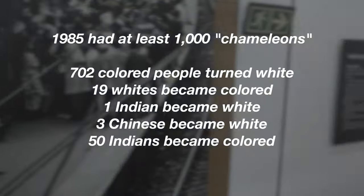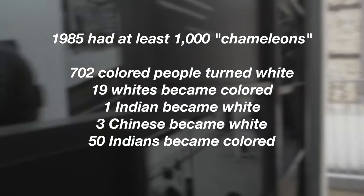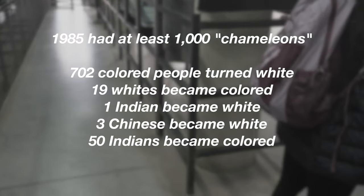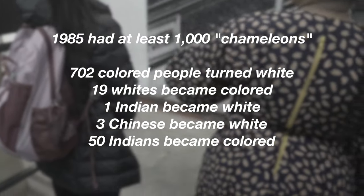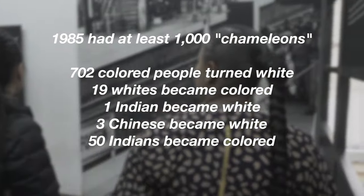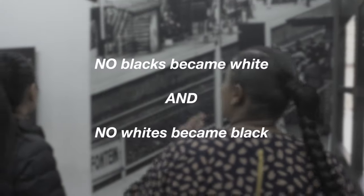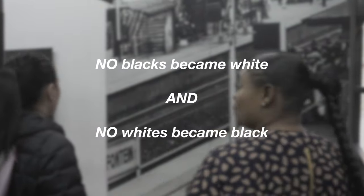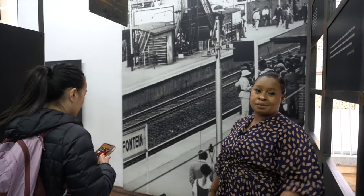In 1985 there were at least 1,000 chameleons — people who had changed. 702 coloured people turned white, 19 whites became coloured, 1 Indian became white, 3 Chinese became white, and 50 Indians became coloured. But it says no blacks became white and no whites became black. It shows that blacks were rated as the lowest class.